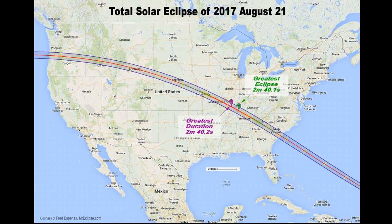As you probably already know, a total eclipse of the Sun is coming across the United States on August 21st. If you are on its path, you will be treated to one of the most amazing sights you can see without a telescope — the Moon blocking out the Sun, making the Sun's corona visible.